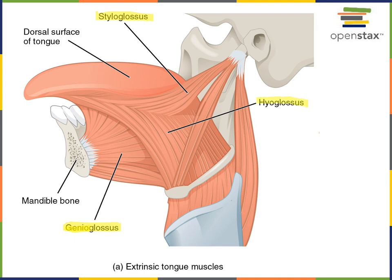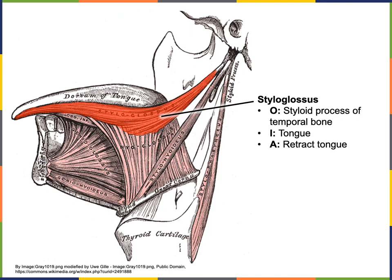Hyoglossus has its origin from the hyoid bone, inserting into the tongue. It performs the action of depressing the tongue and also synergizes with styloglossus in assisting the action of retracting the tongue. To summarize: styloglossus has its origin from the styloid process of the temporal bone, its insertion into the tongue, and its action is to retract the tongue.